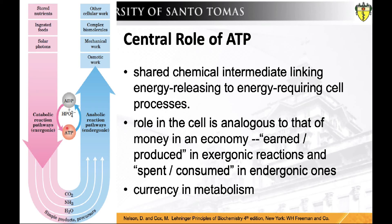Adenosine triphosphate plays a central role in metabolism. ATP is the shared chemical intermediate linking energy-releasing to energy-requiring cell processes. Its role in the cell is analogous to that of money in an economy — it is earned or produced in exergonic reactions and spent or consumed in endergonic ones. The overall network of enzyme-catalyzed pathways constitutes cellular metabolism. ATP is the major connecting link, or the shared intermediate, between the catabolic and anabolic components of this network, with pathways acting on proteins, fats, sugars, and nucleic acids being virtually identical in all living organisms.